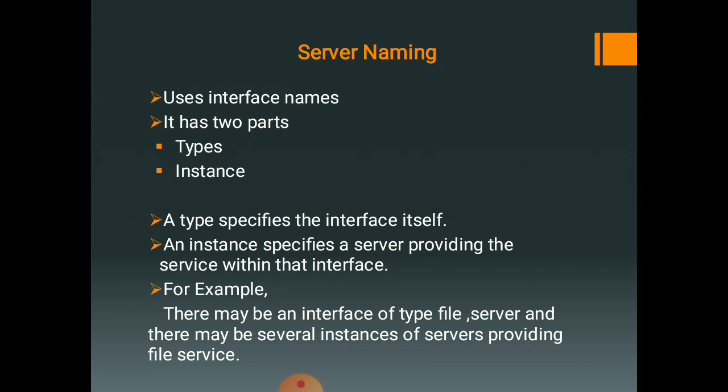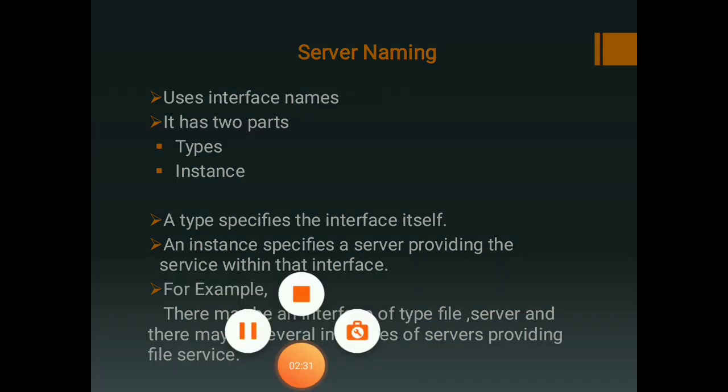The second part of the interface name is an instance. An instance specifies a server providing the service within that interface. For example, there may be an interface of type file server, and there may be several instances of servers providing file service. When a client is not concerned with which particular server of an interface it is requesting, it need not specify the instance part of the interface name.